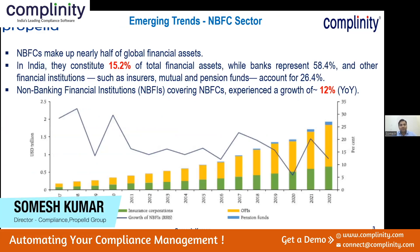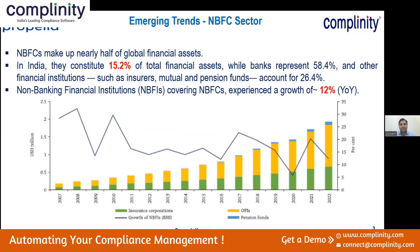On the emerging trend side, at a global level, business is shared by banks and NBFCs in equal portions — 50/50. If one lakh crore business is done by NBFCs, one lakh crore is done by banks also. But in India, the NBFC contribution is only 15 percent of the financial system, while banks represent around 58 percent and other financial institutions — insurers, mutual funds, pension funds — account for around 26 percent.